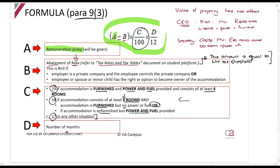The CEO has a remuneration proxy of R10 million a year, and the secretary has a remuneration proxy of R500,000 a year.